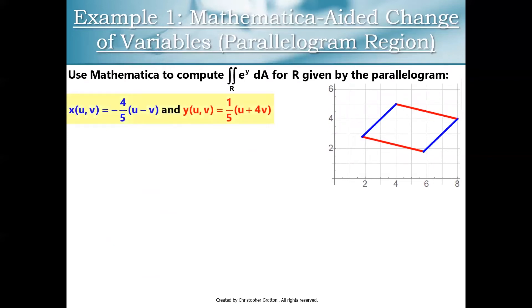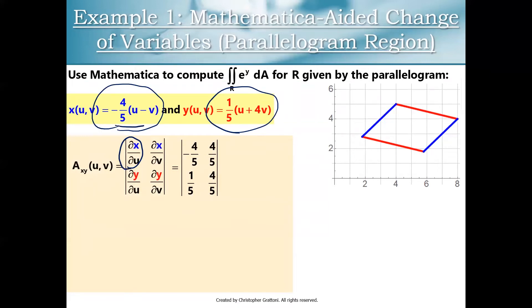So now that we have x as a function of u and v and y as a function of u and v, we need our area conversion factor, our Jacobian determinant. We just have to compute a couple partial derivatives. The nice thing here is that x of u v and y of u v, we have linear equations on the right hand side. So when we start taking some partial derivatives, we just really get a bunch of constants here. So for example, let's look at dx du. dx du is the partial derivative of negative four fifths u minus v with respect to u. Well, the partial derivative of u is one and the partial derivative of v with respect to u is zero. So there's a one here and a zero here. And so we're just left with negative four fifths. You could do that for all four entries in this matrix.